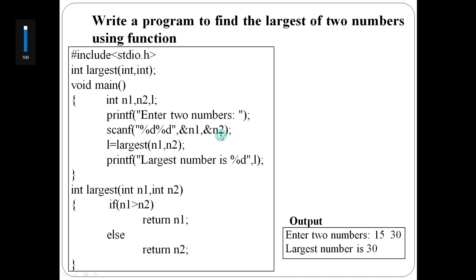n1 gets 15 and n2 gets 13 assigned. Then function call: l equal to largest of n1, n2. 15 and 30 are passed. The function returns 30 and assigns it to l. Then print 'largest number is l', and 30 is displayed.